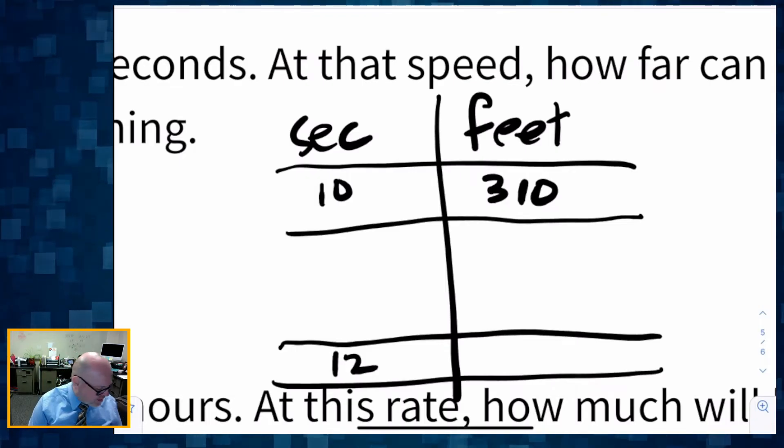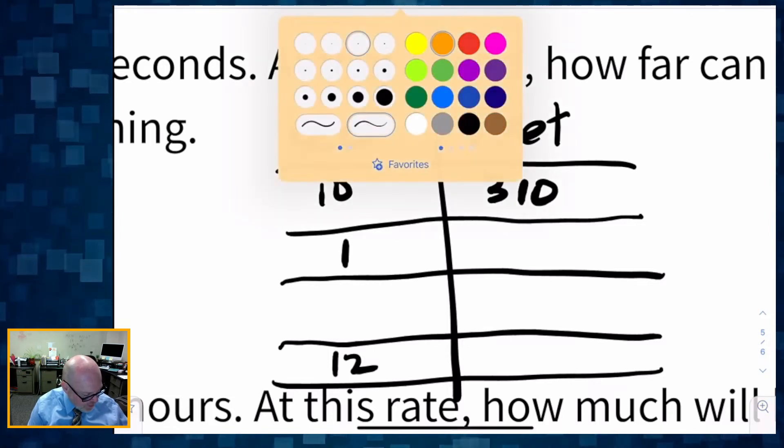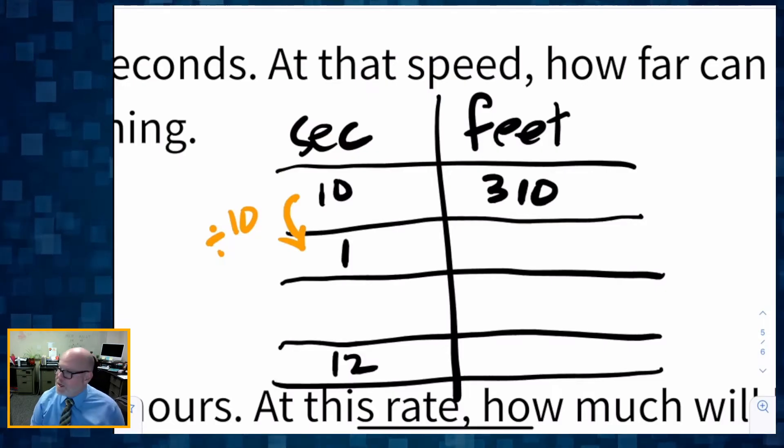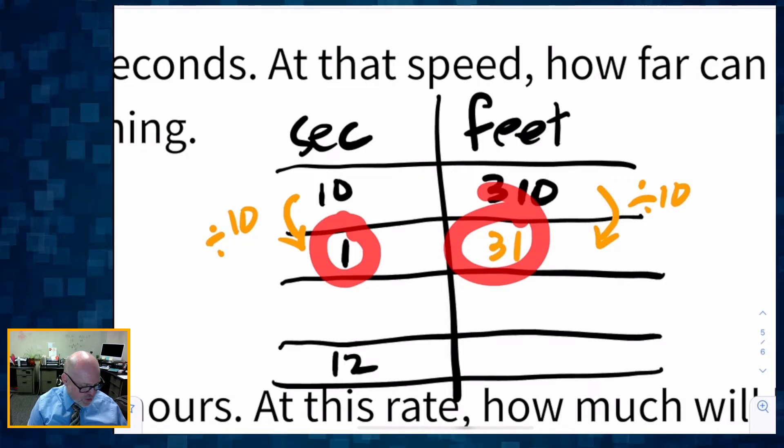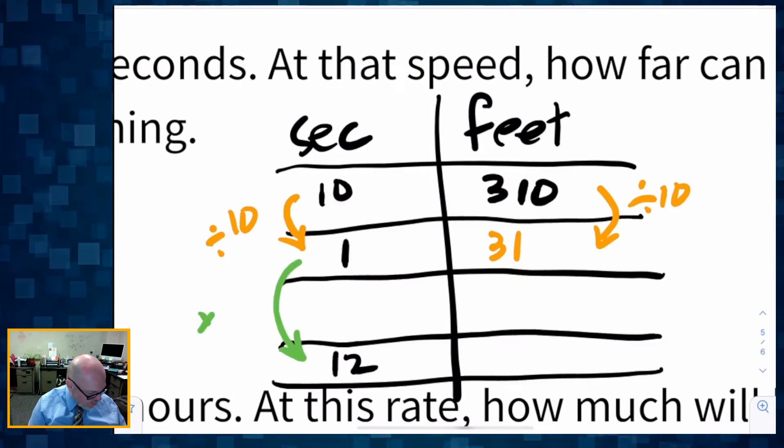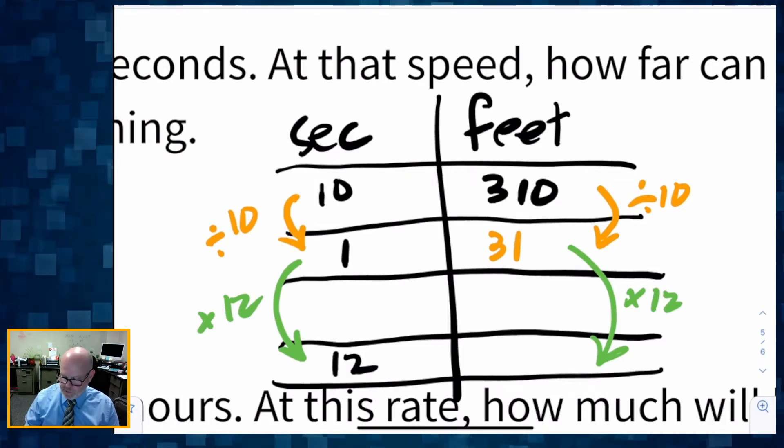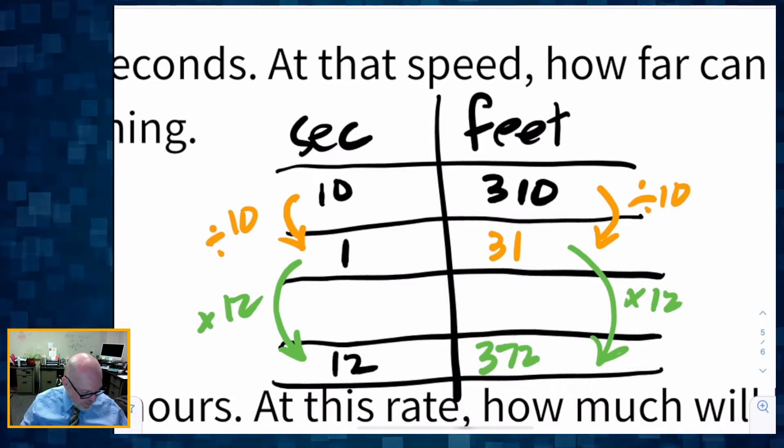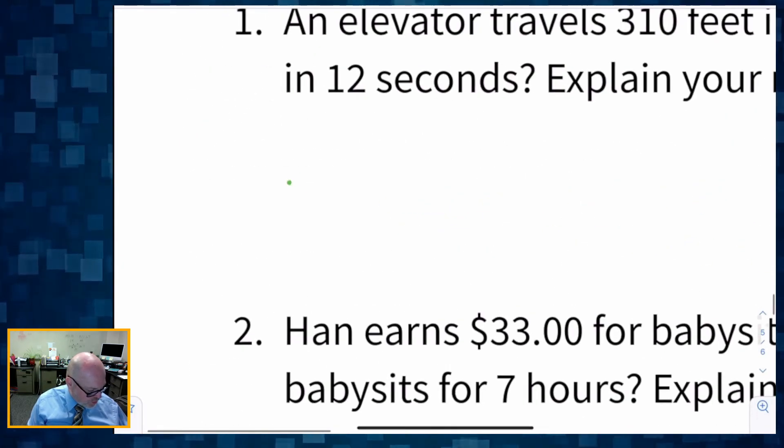And we want to figure out how far is it going to travel in 12 seconds. A couple of ways we could do this. One way is I'm going to find that unit rate. I don't have to. There's a variety of ways to do it, but I'm going to find that unit rate. So 10 divided by 10 gives me one second, which means I'm going to divide this by 10. That gives me 31 feet. So one second travels 31 feet. So now all I have to do is scale it back up to 12 seconds. So 1 times 12, 31 times 12 is 372. So how far can it travel in 12 seconds? 372 feet.